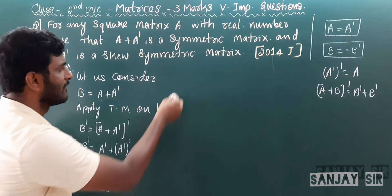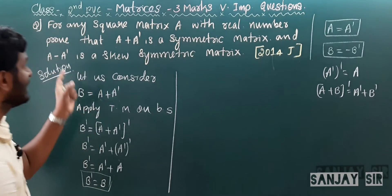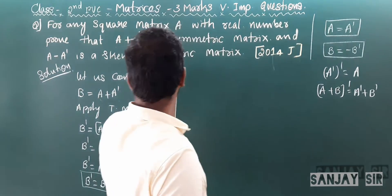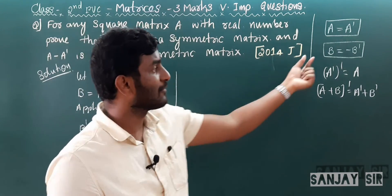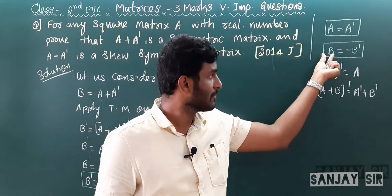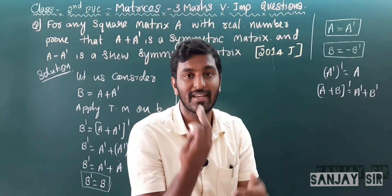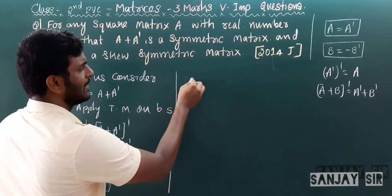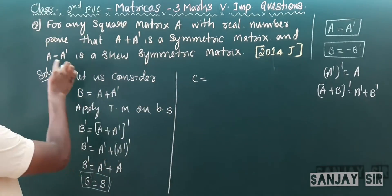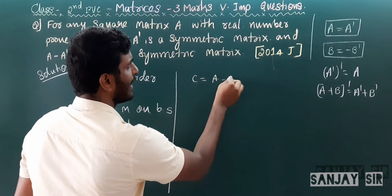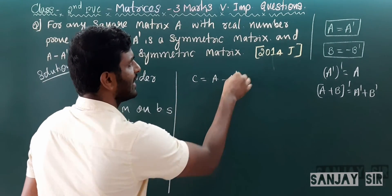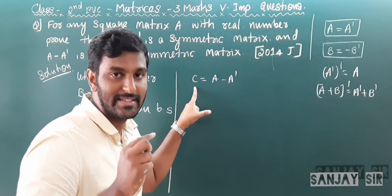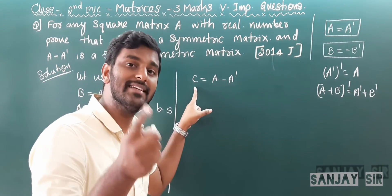Next, we have to prove A − A' is skew-symmetric. Let C = A − A'. We have to prove C = −C', or equivalently −C = C'.